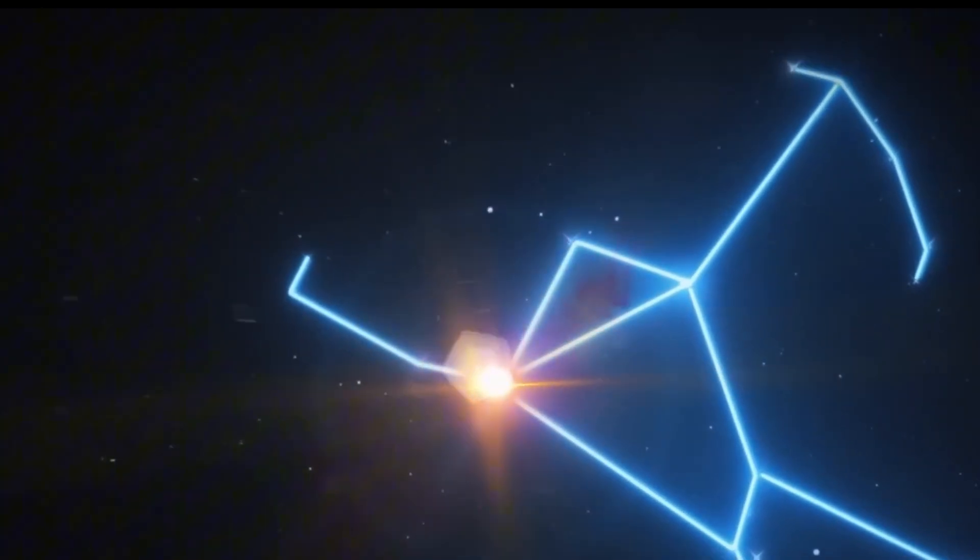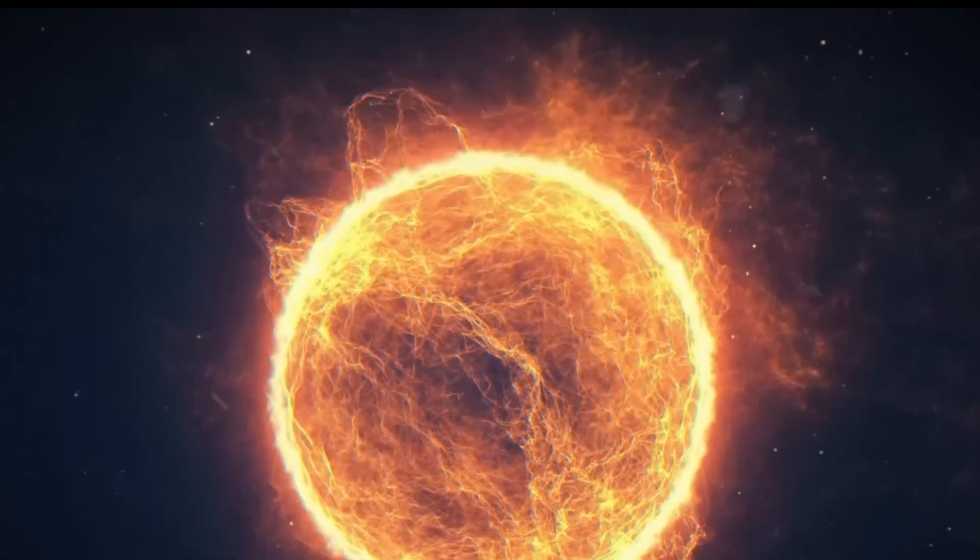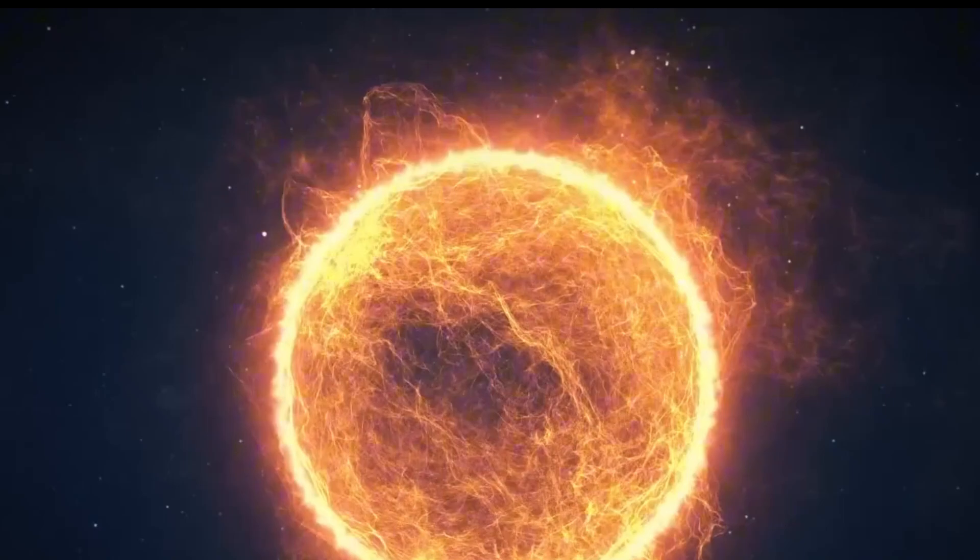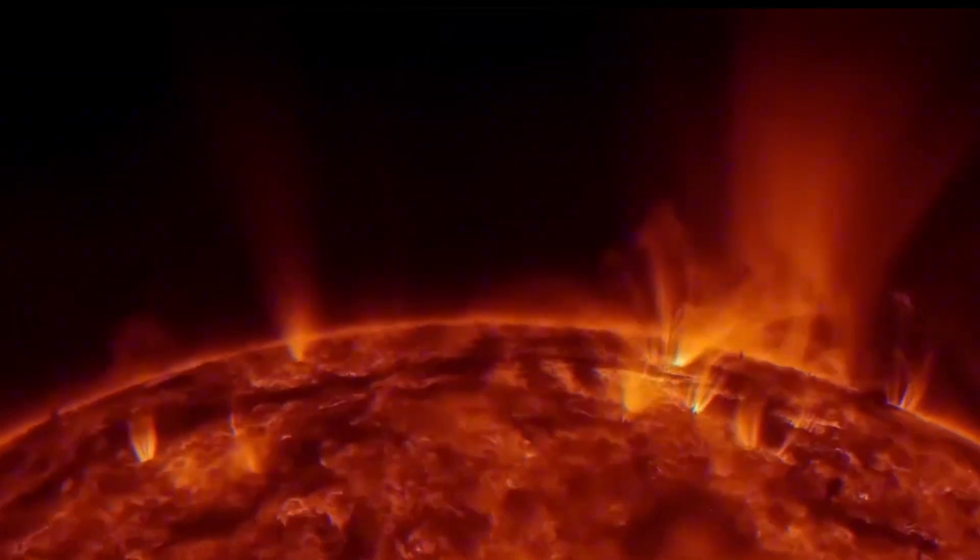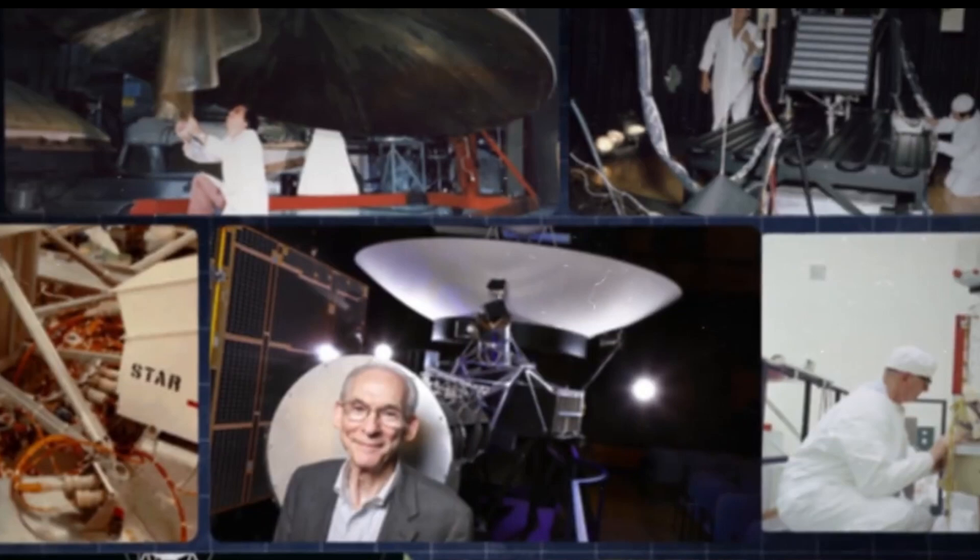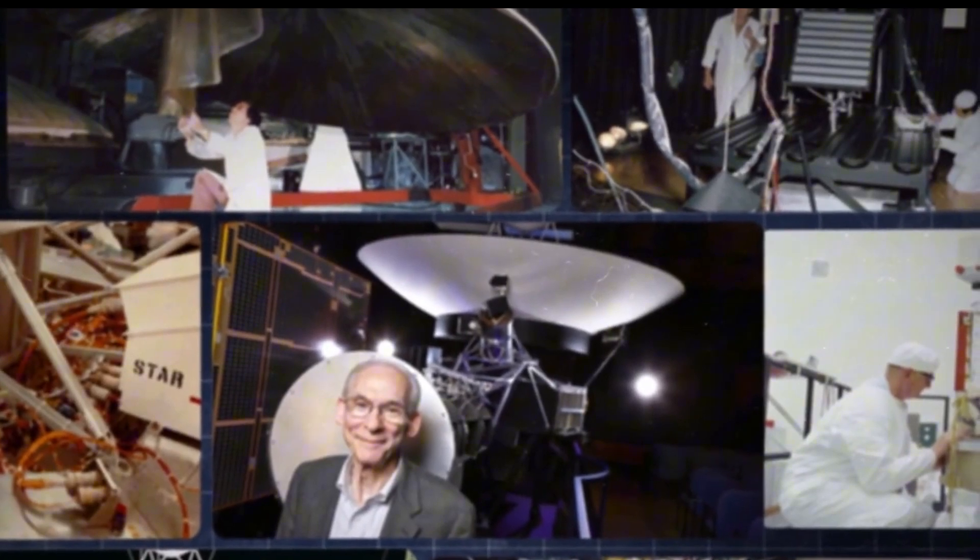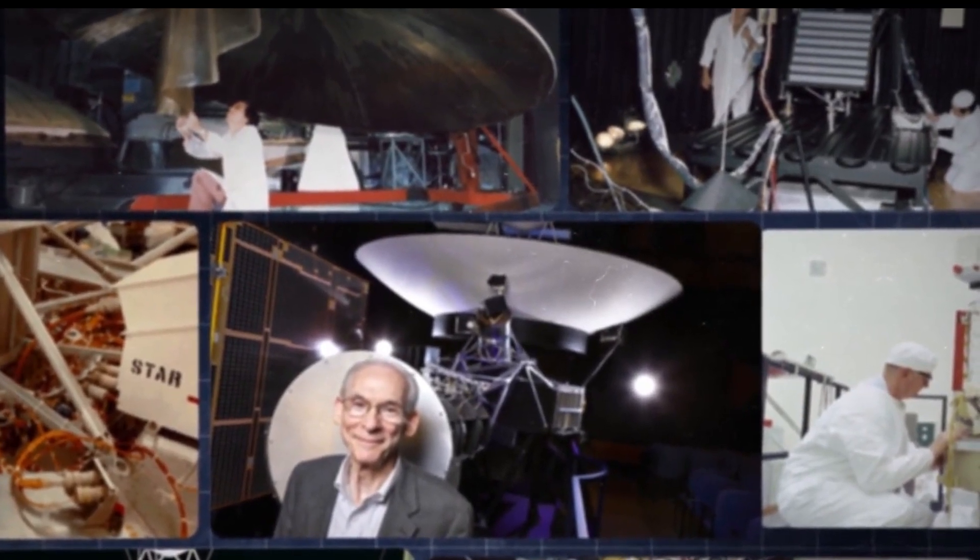CMEs can travel more than 1,800 miles per second while ejecting magnetic fields and plasma into space, which allows them to occasionally arrive on Earth in a matter of hours. A CME can disrupt and harm Earth's satellites and power infrastructures when it occurs on the side of the Sun that faces the planet, and it occasionally puts astronauts in orbit in danger.